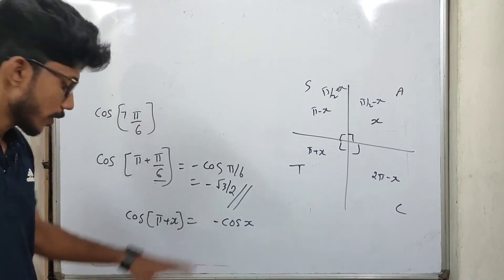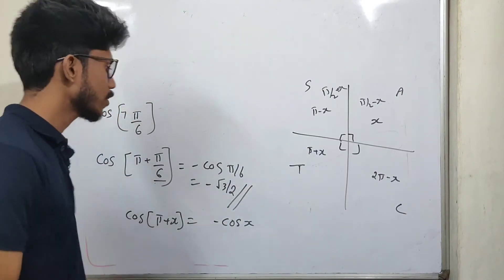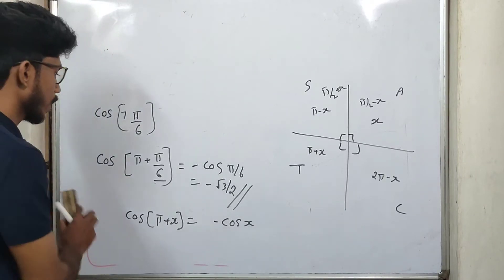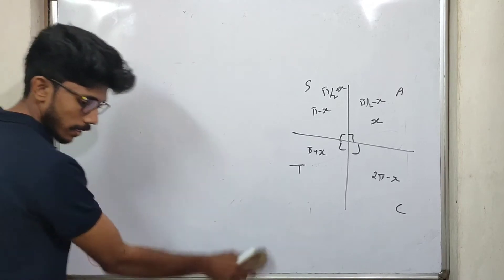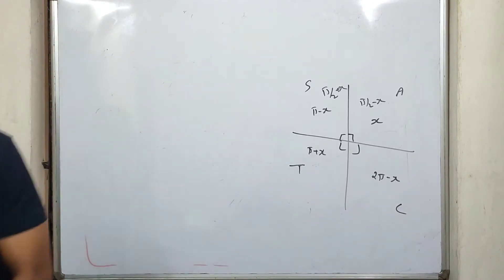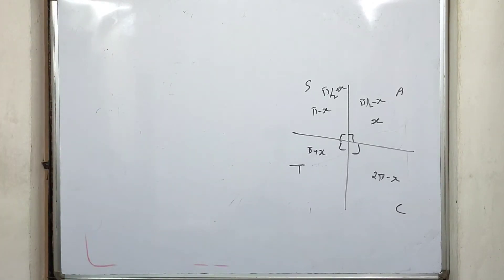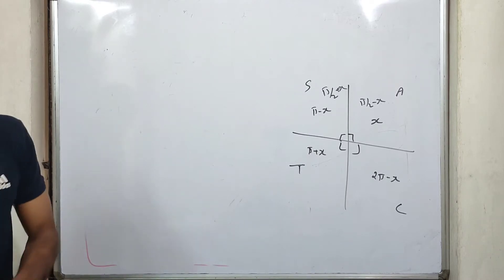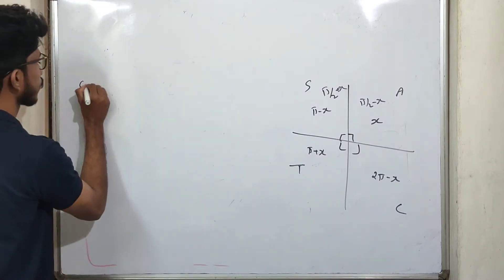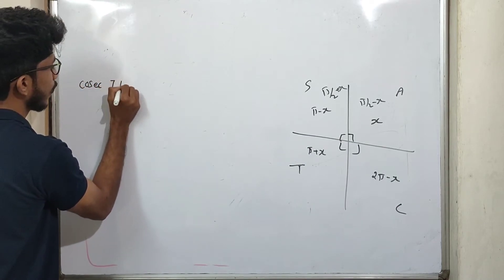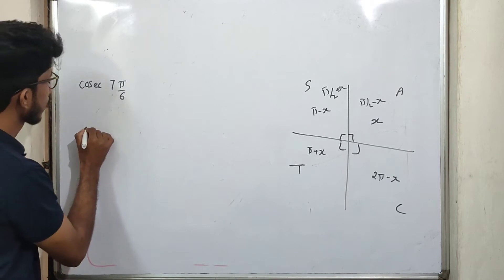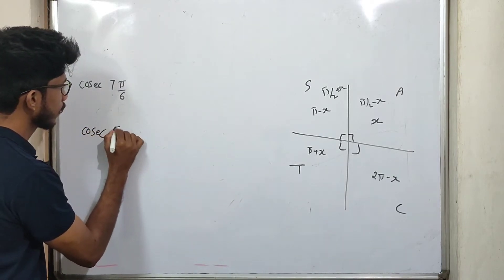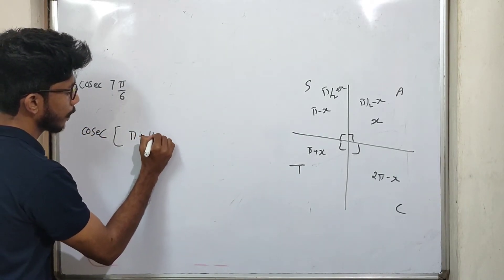Clear? OK. We will learn some questions. We will learn how to identify the same thing. This is cosec(7π/6). We will learn how to identify cosec(7π/6).